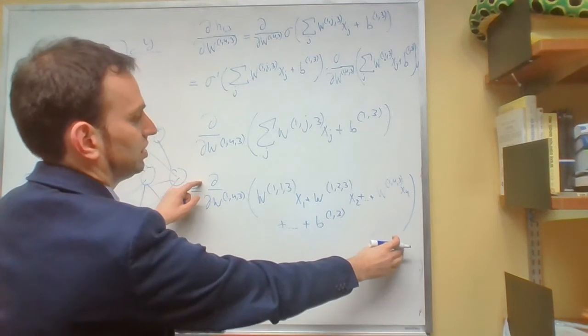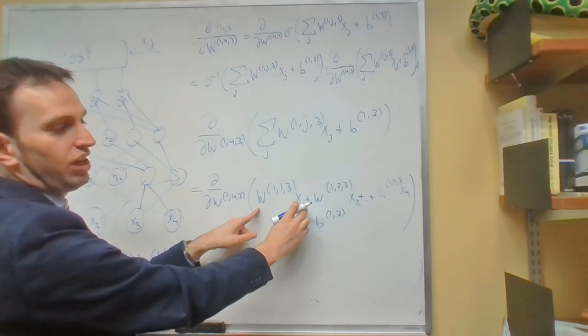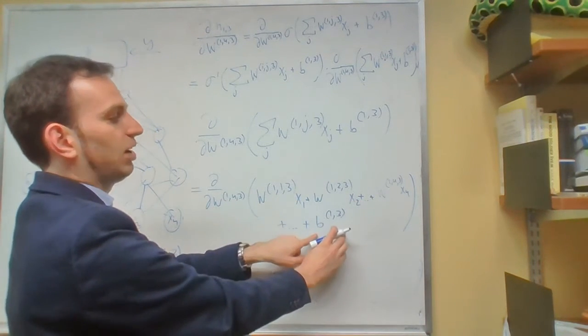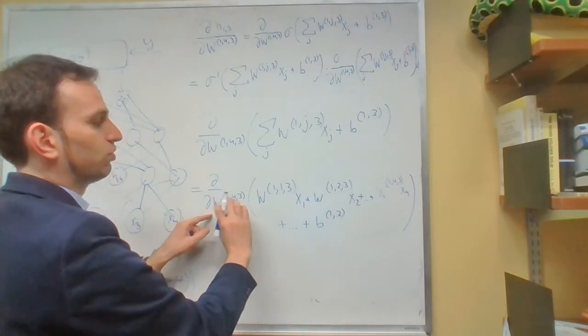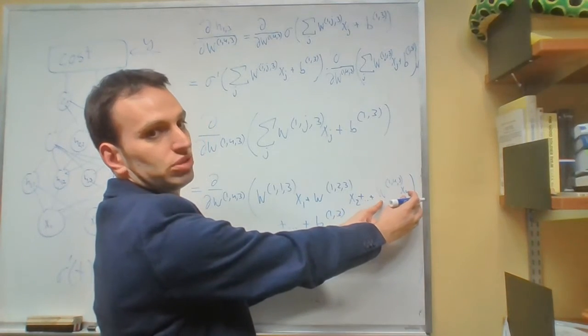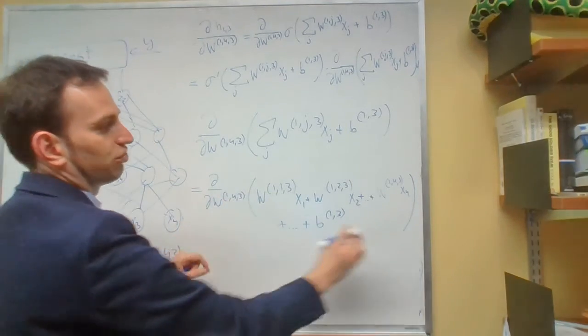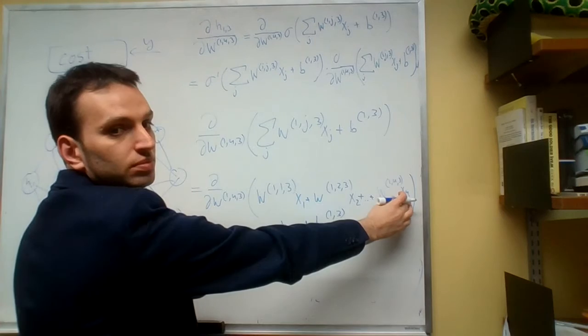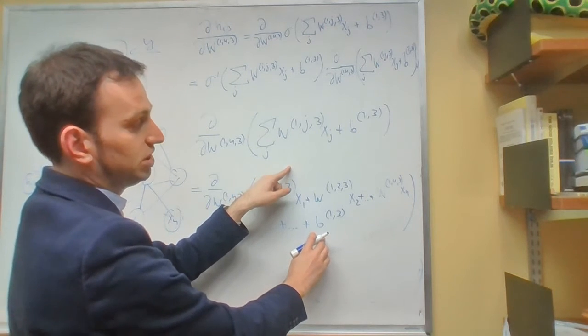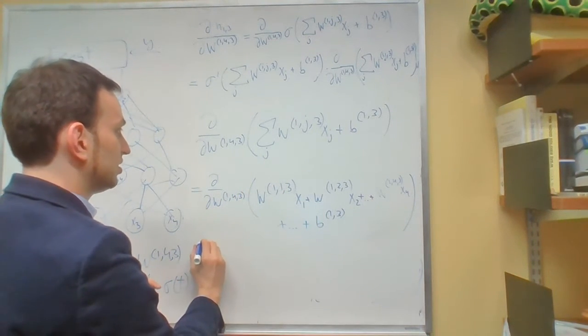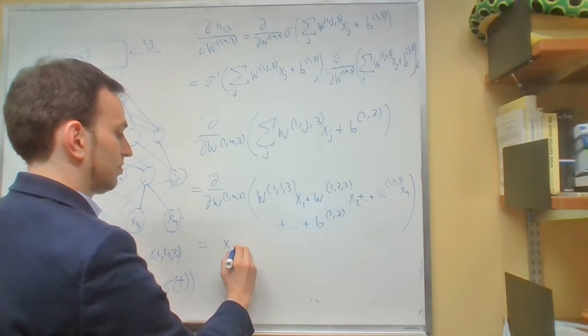Well, if you try to change w143, this guy wouldn't change and this guy wouldn't change and this guy wouldn't change. In fact, the only term that would change is this guy because if you change w143, this guy grows by how much? The derivative of this term with respect to w143 is going to be just x4. The derivative with respect to w143 of all the other terms is just going to be 0. So what that means is that this is going to be equal to x4.